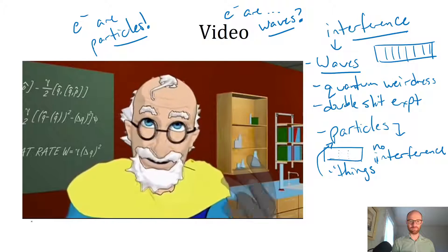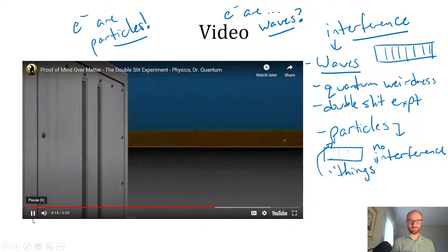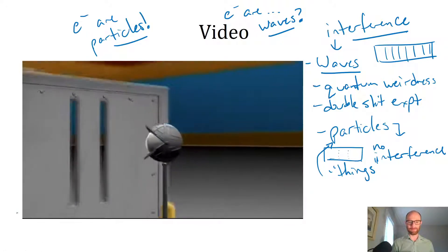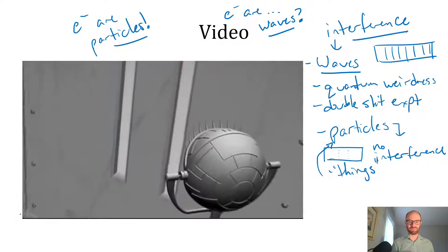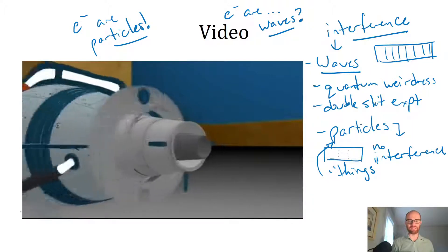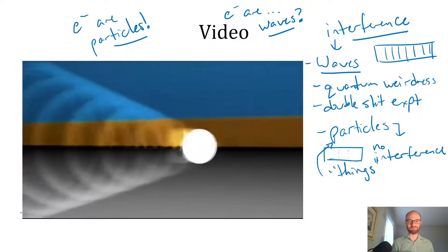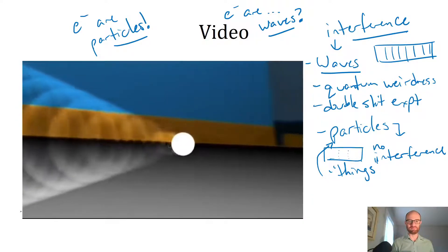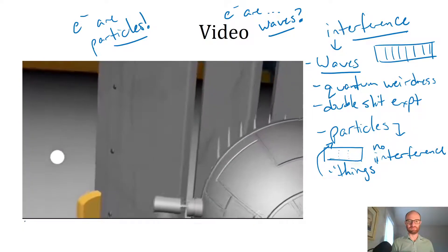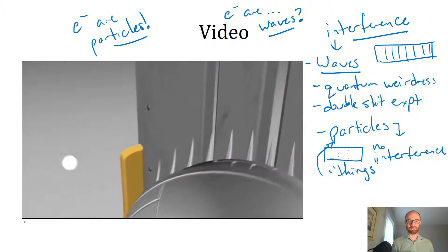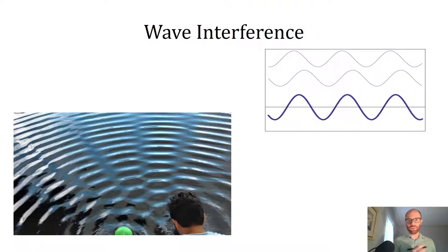Physicists were completely baffled by this, so they decided to peek and see which slit it actually goes through. They put a measuring device by one slit to see which one it went through and let it fly. But the quantum world is far more mysterious than they could have imagined. When they observed, the electron went back to behaving like a little marble. It produced two bands.